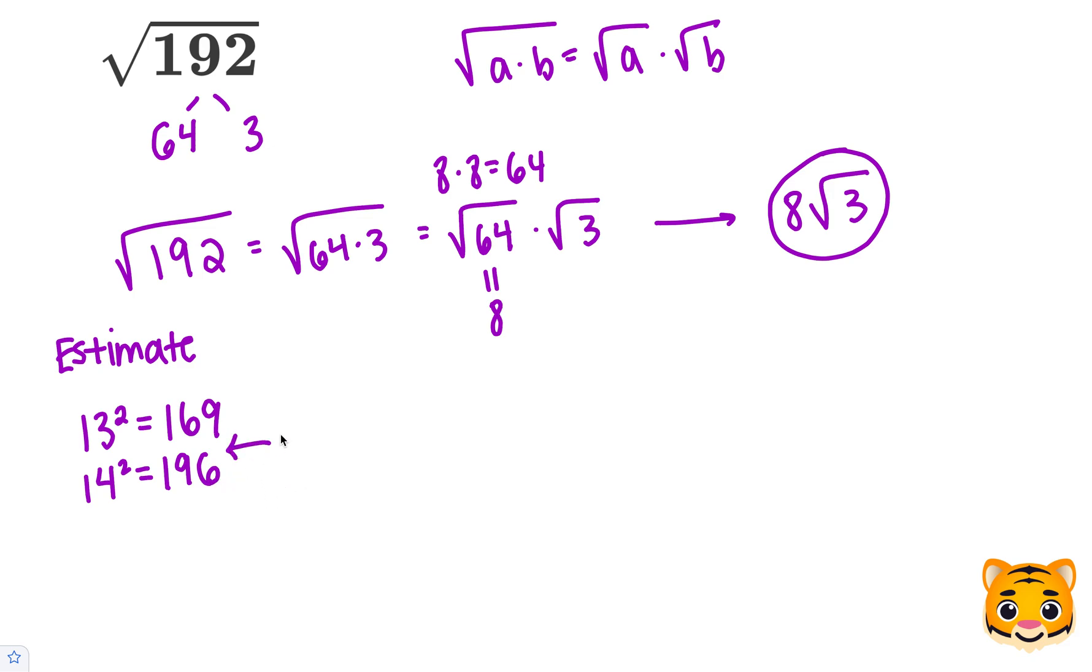So we can see that 192 lies between 169 and 196, but it is very close to 196. So we can say that the square root of 192 is between the square root of 169 and 196. And we can do this because we know 192 is between 169 and 196. Now we can rewrite the square root of 169 as 13. We can rewrite the square root of 196 as 14.